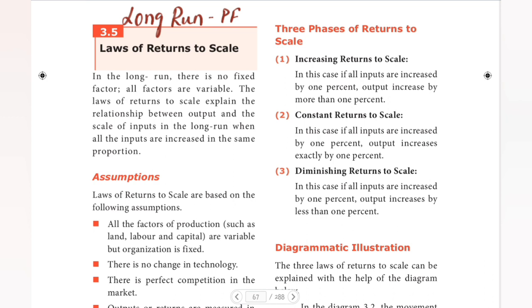In the short-run production, we have fixed all factors except one — one factor is variable and can increase. That is why we have three stages to look at.